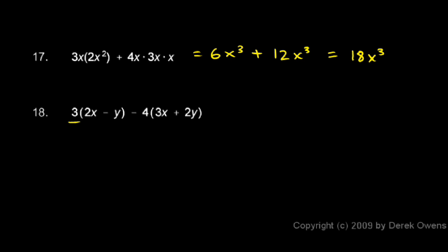This is 3 times 2x minus y, so the 3 gets multiplied by the 2x, and by this minus y. So this first term becomes, we'll do 3 times 2x, that's 6x, minus 3 times y, so 6x minus 3y.